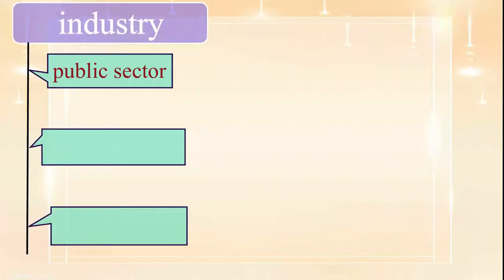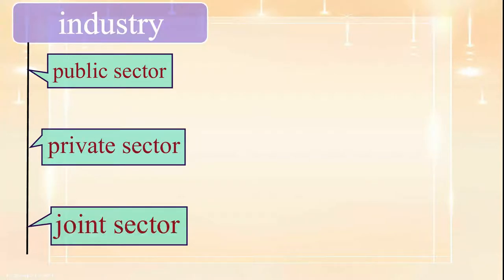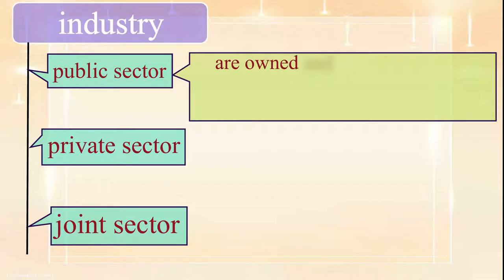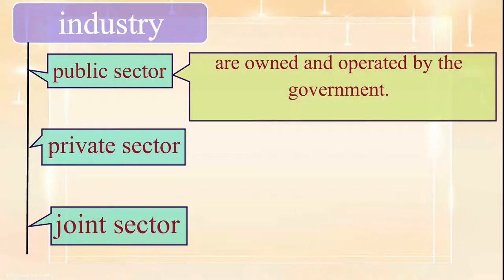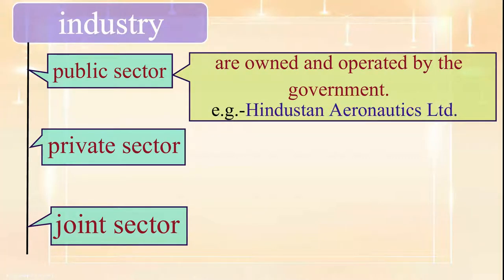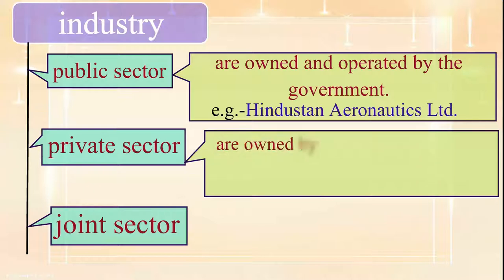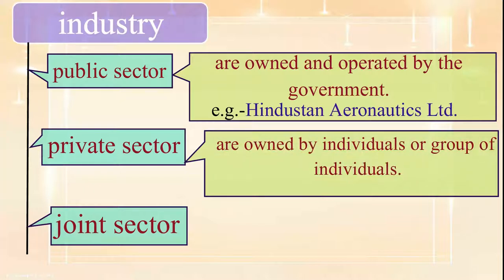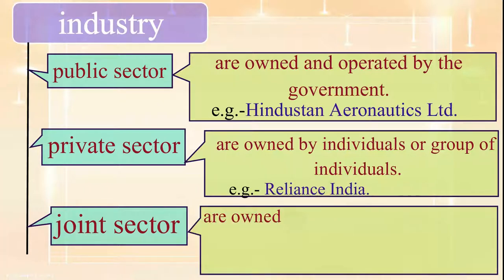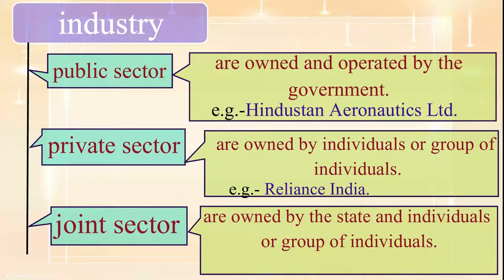On the basis of ownership, industries are classified into three: public sector, private sector, and joint sector. Public sector industries are owned and operated by the government — for example, Hindustan Aeronautics Limited. Private sector industries are owned by individuals or a group of individuals — for example, Reliance India. Joint sector industries are owned by the state and individuals or a group of individuals — for example, Maruti Udyog Limited.